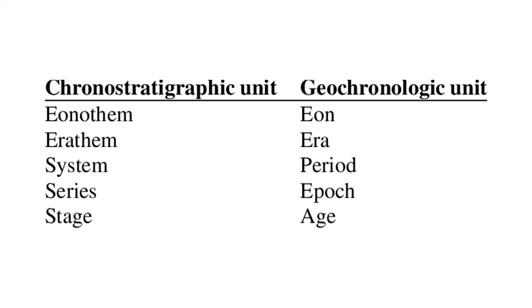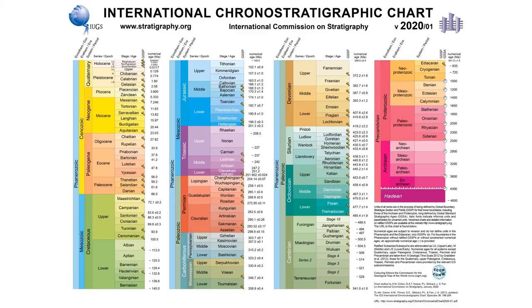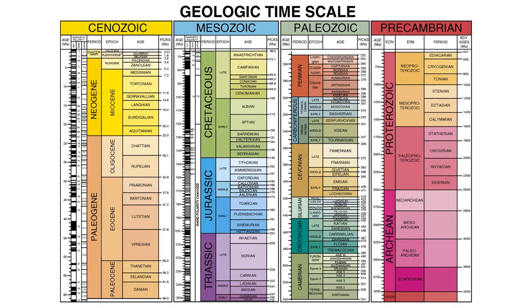Eons are the longest time intervals; ages are the shortest. Chronostratigraphic units have corresponding geochronological units — this makes sense, as the purpose of the geologic timescale is to relate the rocks we see on Earth in the present to time intervals that transpired in the past. Those who plan to dig deep into geology should commit to learning the eons, eras, and periods of the geologic timescale. The epochs and ages will come later, but the eons, eras, and periods are the first step in developing a strong, thorough understanding of Earth history.